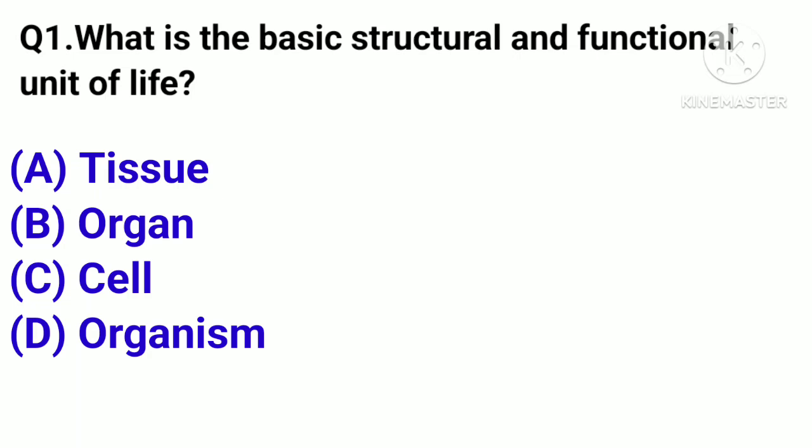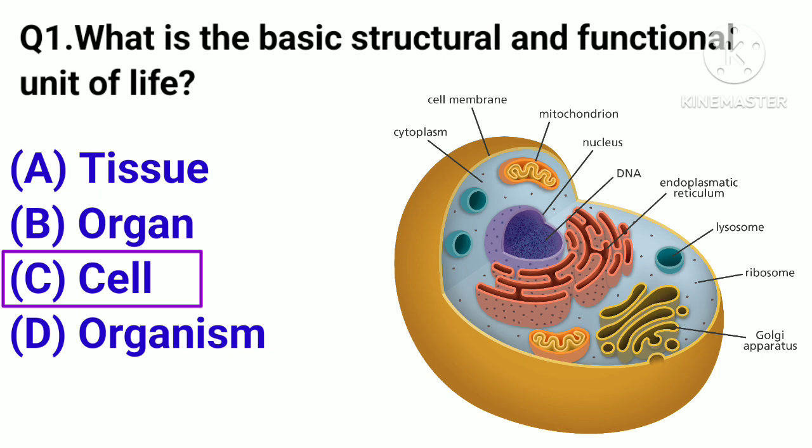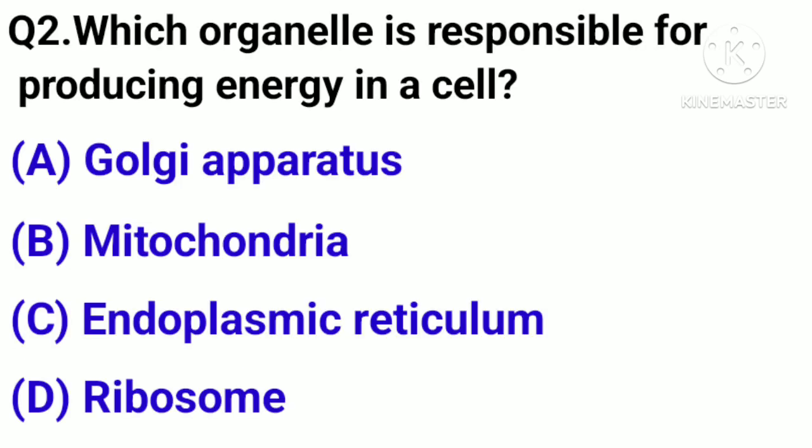Question number 1. What is the basic structural and functional unit of life? Option A: Tissue. B: Organ. C: Cell. D: Organism. Correct answer: Option C, Cell.